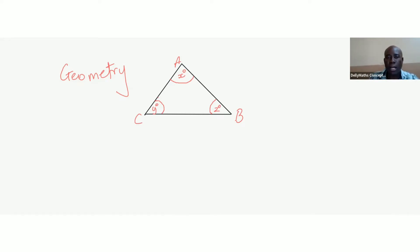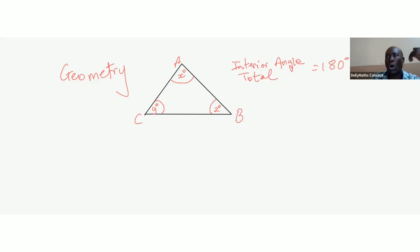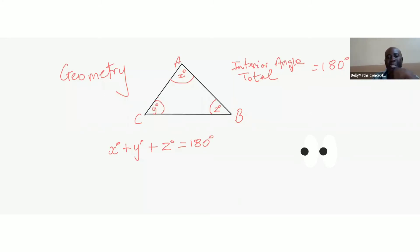One of the fundamental principles of a triangle is that its total interior angles will add to give 180 degrees. So x degrees plus y degrees plus z degrees equals 180 degrees. That's the total interior angle of a triangle.